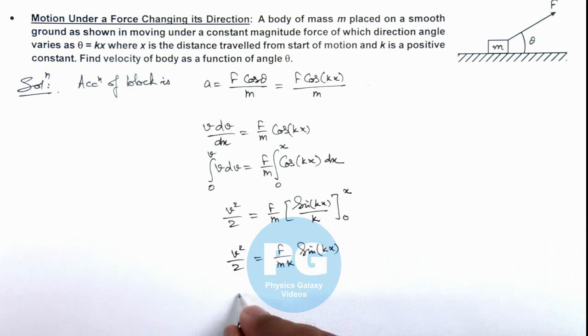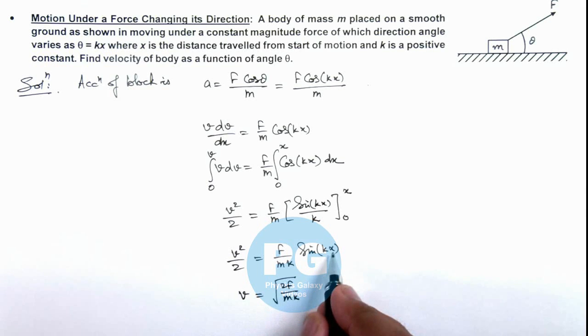And on simplifying we are getting the speed of body which is root of 2f by mk sine kx. We can write again as sine theta because the value of kx is theta. This will be root of 2f by mk sine theta - that'll be the final result of this problem, the speed of body as a function of angle theta.